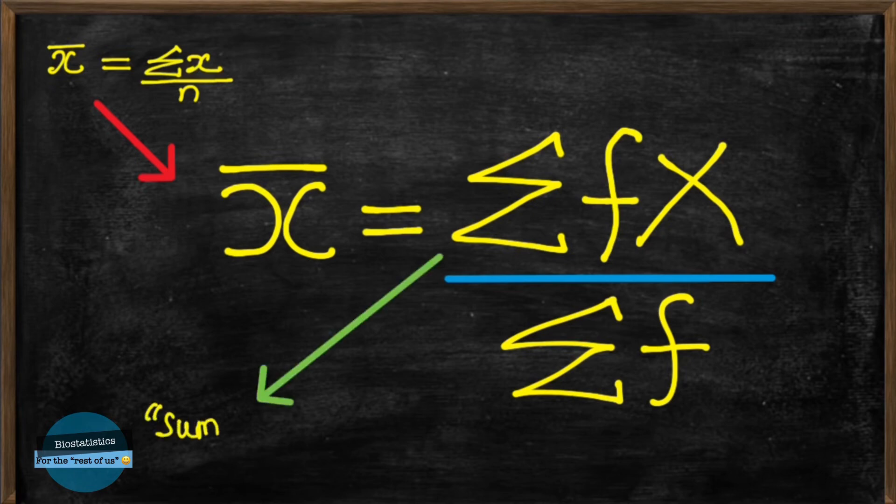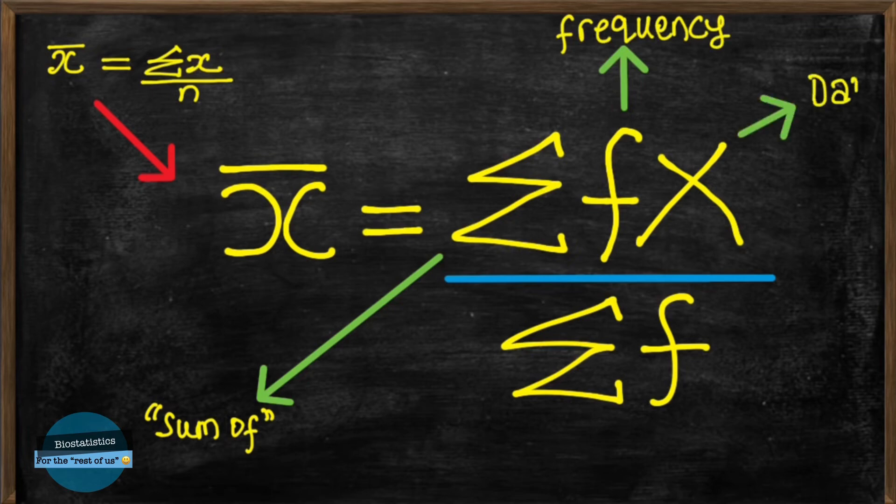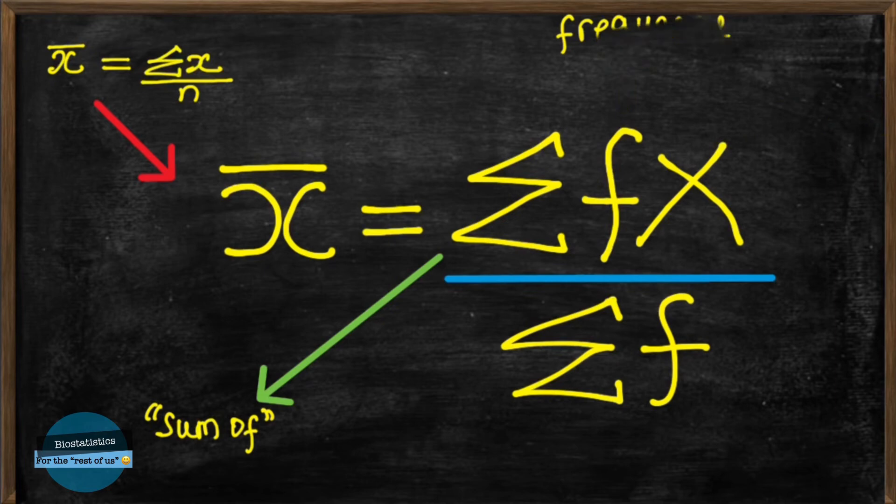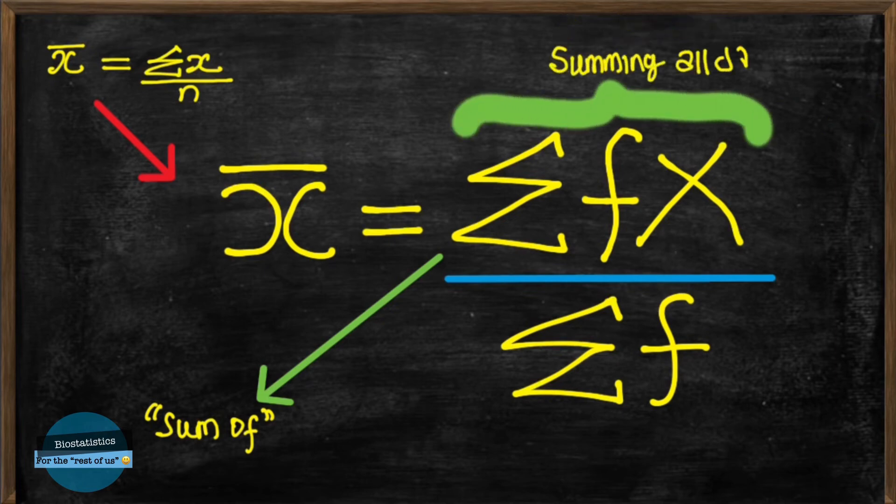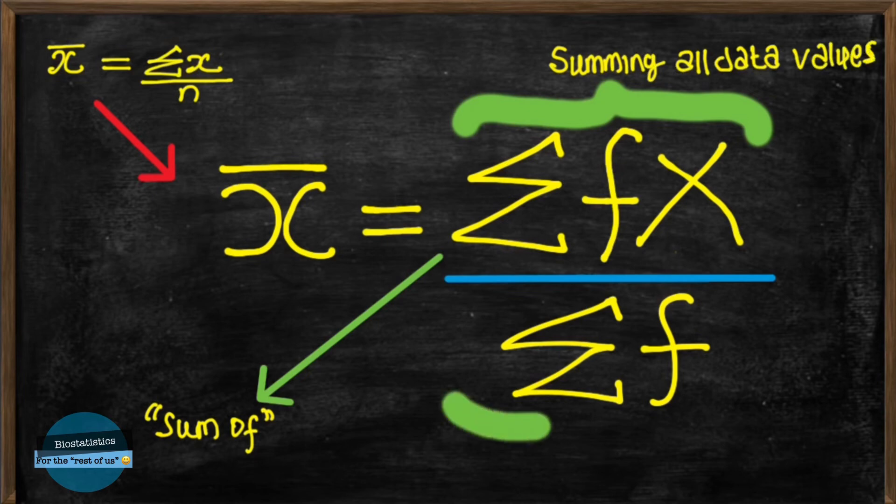Sigma means sum of, f here means the frequencies, and we know x is the data values. So f of x means we need to first multiply all the values by the frequencies, like we did in the example. And summation f of x will be summing all of them up. And for the denominator, summation f, we will be summing all the frequencies together.